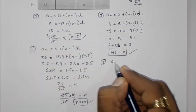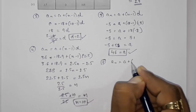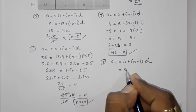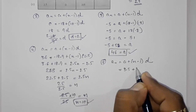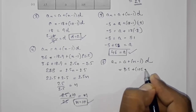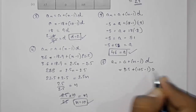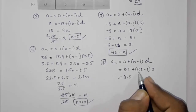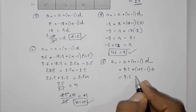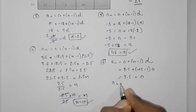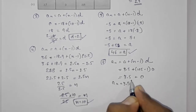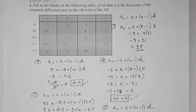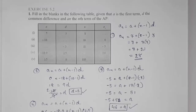Answer 5: a is 3.5, n is 105, and d is 0 — we need to find an. Using the formula: an equals 3.5 plus 104 into 0. Since 0 multiplied by anything is 0, your an will be 3.5. This is how you solve this exercise. Thank you so much for watching — if you like it, please subscribe to my channel.